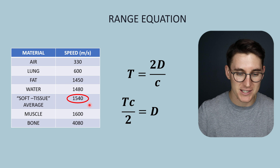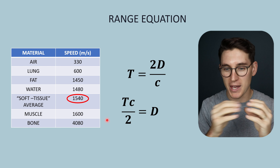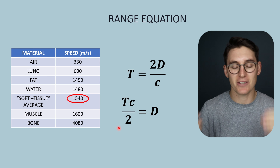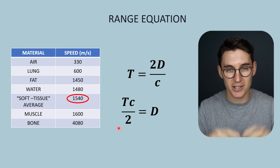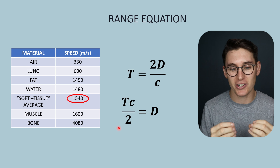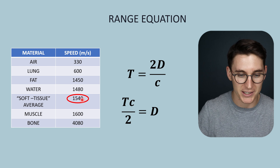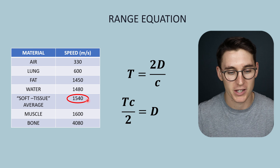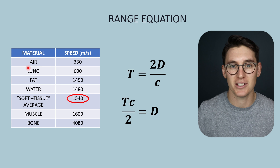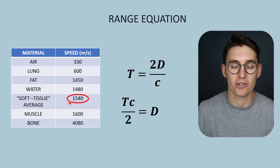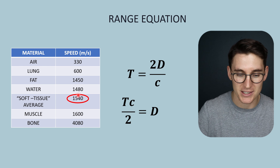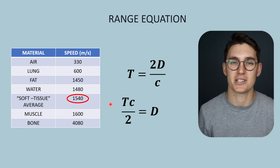1540 meters per second is the critical value that you have to commit to memory. Many past papers ask you to calculate these equations and they don't give you this value — it is assumed knowledge. In the ultrasound question bank linked below we'll go through multiple different equations, and at no stage will I give you this value. You can see that the speed of sound varies quite a lot in various different materials, but we use this soft tissue average, which can actually produce some artifacts.